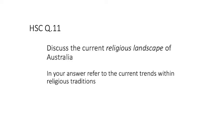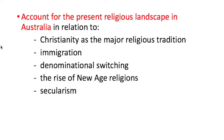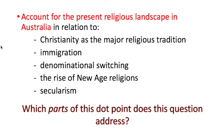This question is going to respond to HSC question 11: 'Discuss the current religious landscape of Australia. In your answer, refer to the current trends within religious traditions.' The first thing you'll need to ask yourself is which dot point does this question address? It's 'account for the present religious landscape in Australia.' So we might ask which parts of this dot point does this question address?